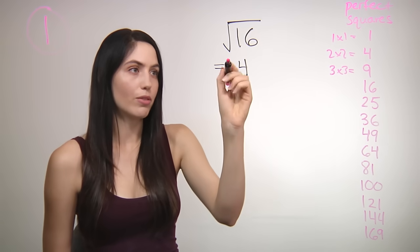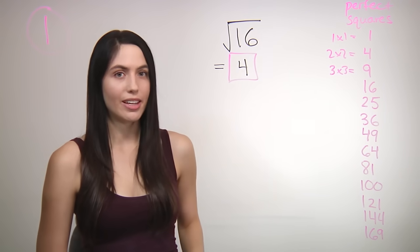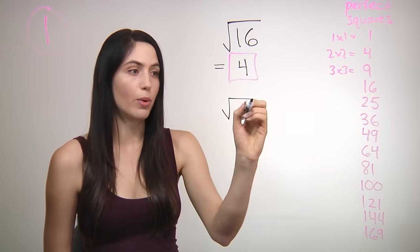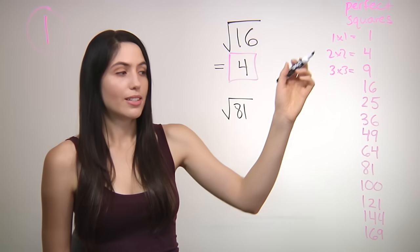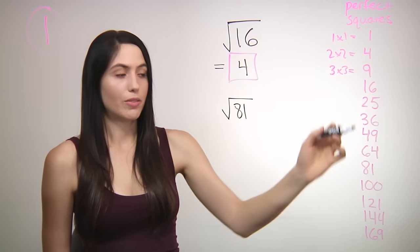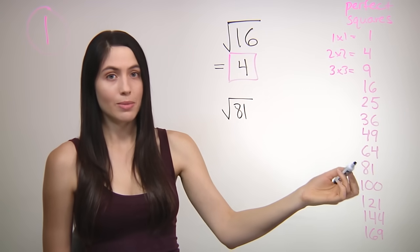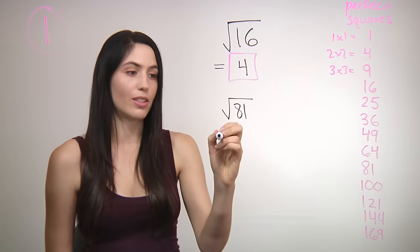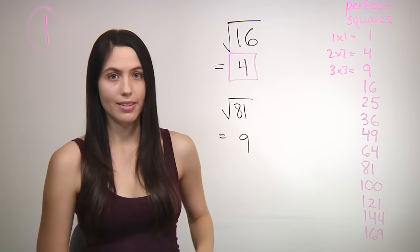So the answer is just 4. Similarly, if you had square root of 81, check to see if it's on your perfect square list. And since 9 times 9 gives you 81, the answer is just 9.